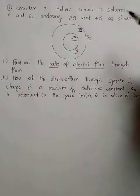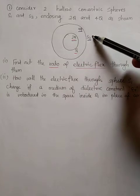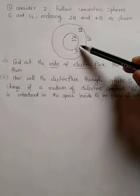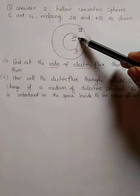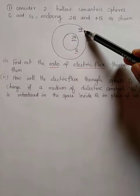We have two hollow spheres, S1 and S2. S1 has a charge of 2Q and S2 has a charge of 4Q.